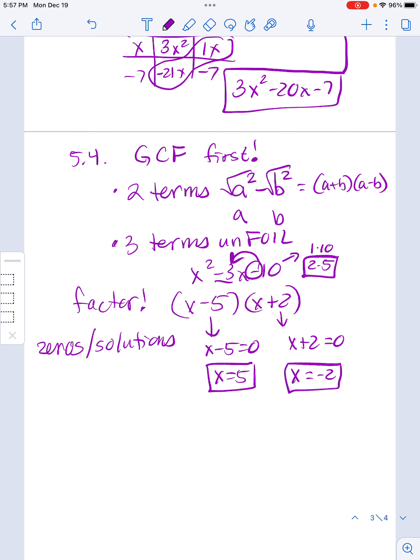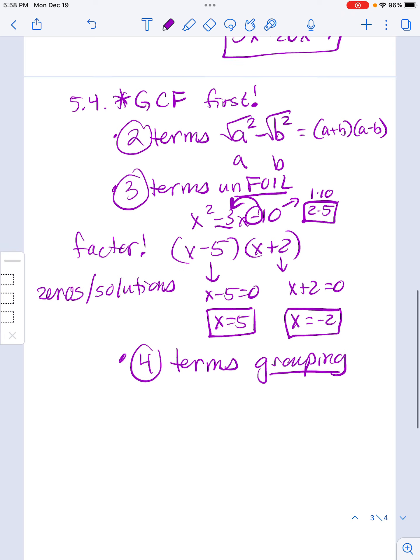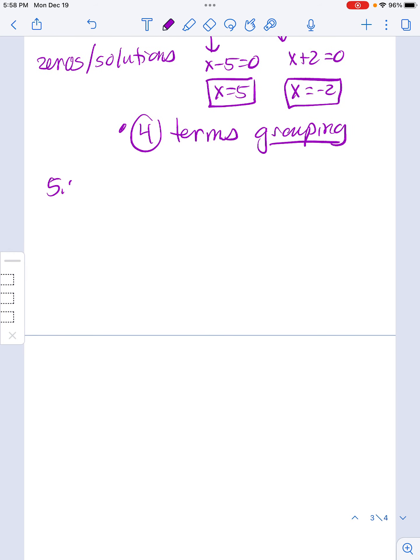And lastly, if you have four terms, you have to utilize grouping and grouping is where you split it down the middle. So again, watch the video going over the back of the worksheet from the review. It'll explain how to do all of them, but it'll always focus on how many terms are there. Cause that's how you decide which method to use, but you want to pull out a GCF first, if that exists. And then that factoring is key for five, five.